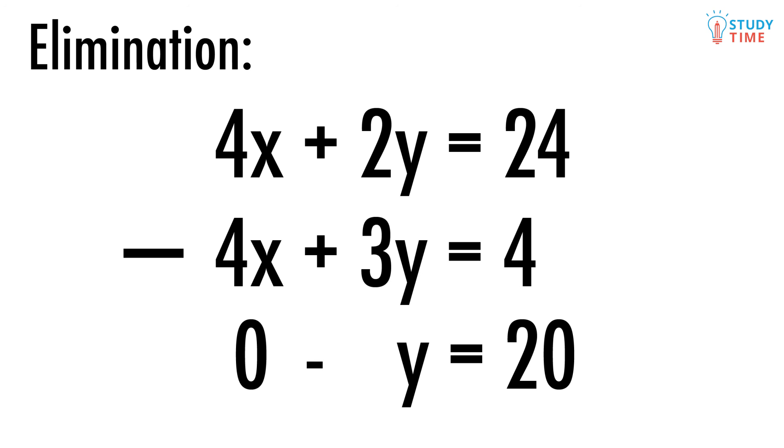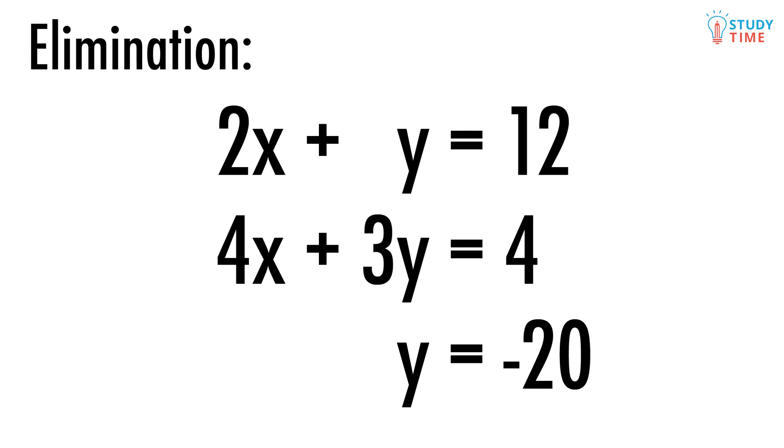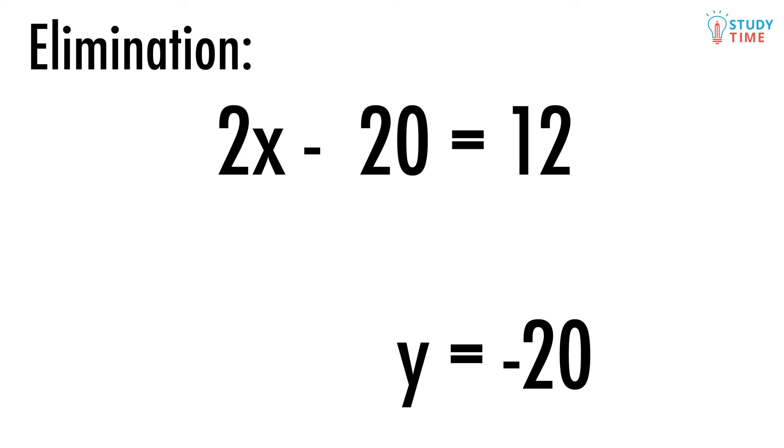If we multiply both sides by negative 1 we get y equals negative 20. Sweet. So let's plug that y value back into one of our equations. It doesn't matter which one because if they're both true then they should both give the same answer. Let's take the first equation and input y equals negative 20. So 2x minus 20 equals 12.